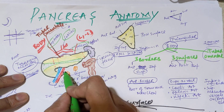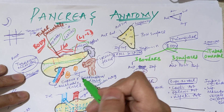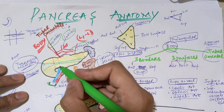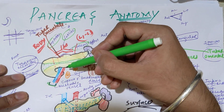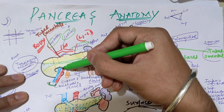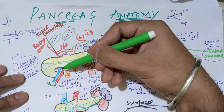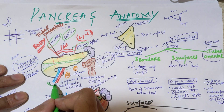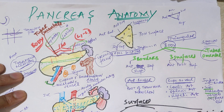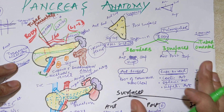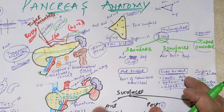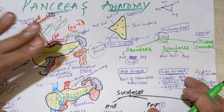On the inferior border, we have only the superior mesenteric vessels — the vein and the artery. These are present on the right end of the body; there is nothing on the left or middle part of the body. So we have only the superior mesenteric vessels on the inferior border.